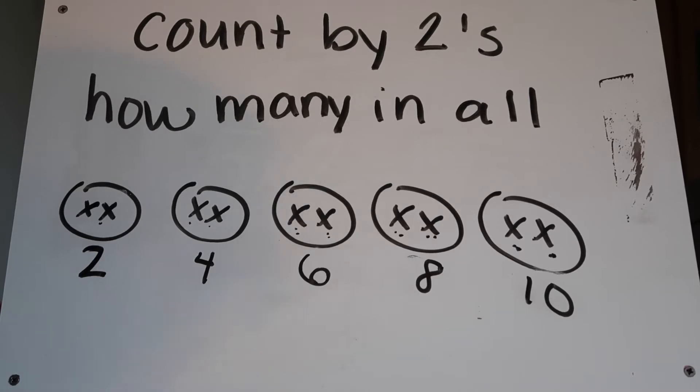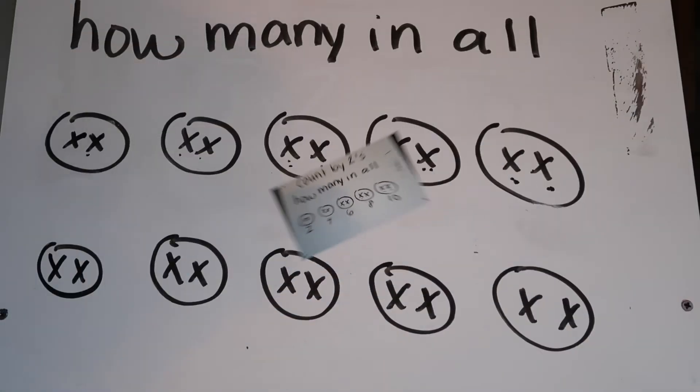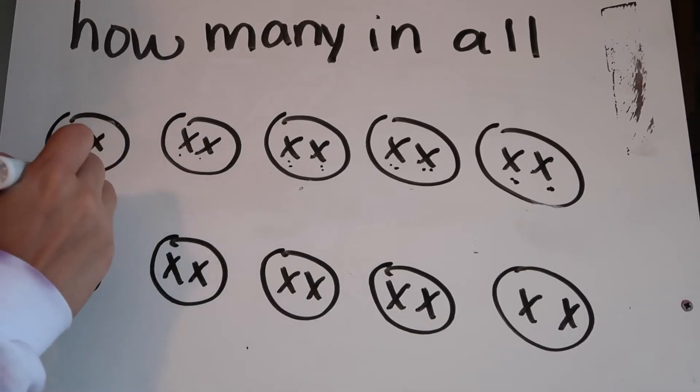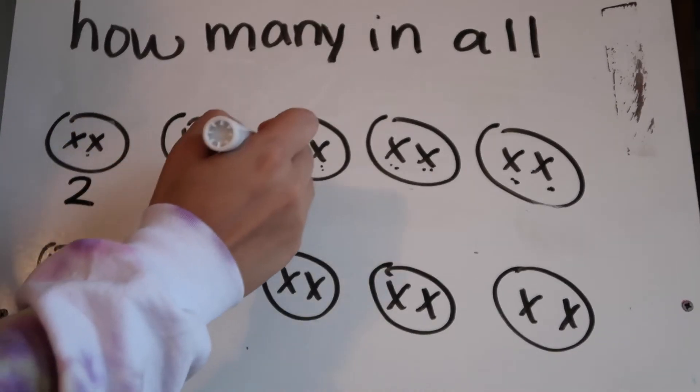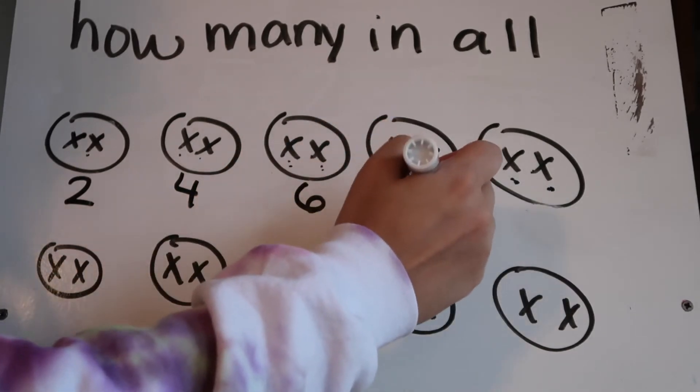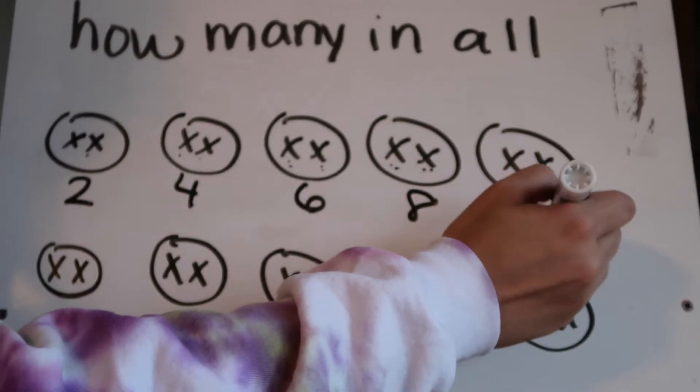Now I have more and I'm just going to count them like I did last time: one, two, three, four, five, six, seven, eight, nine, ten, eleven, twelve, thirteen, fourteen, fifteen, sixteen, seventeen, eighteen, nineteen, twenty.